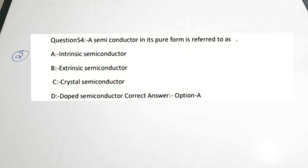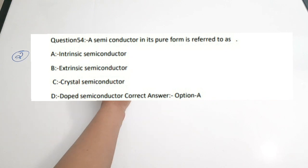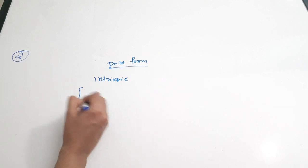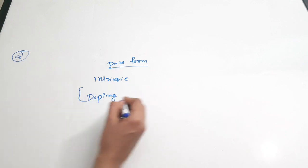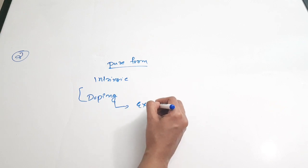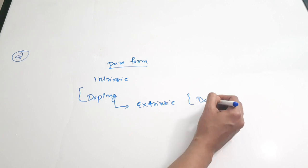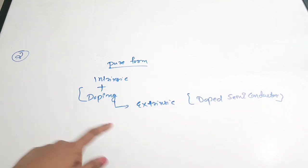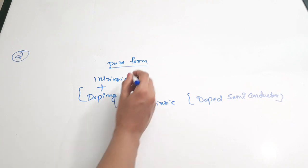Second question: a semiconductor in its pure form is referred to as dash. Options are: A) intrinsic semiconductor, B) extrinsic, C) crystal semiconductor, D) doped semiconductor. In extremely pure form, a semiconductor is called intrinsic. If you perform doping on an intrinsic semiconductor, it is converted to extrinsic, also called doped semiconductor. Since the question asks about the pure form, the answer is intrinsic — option A.